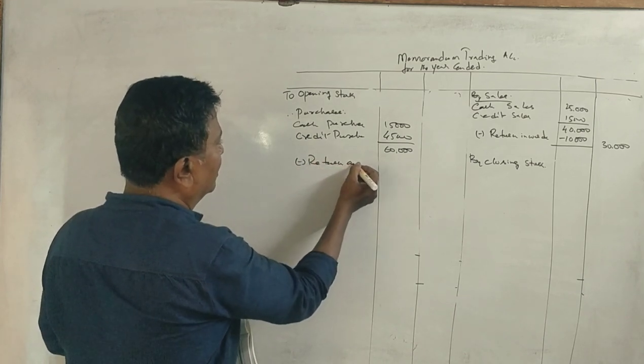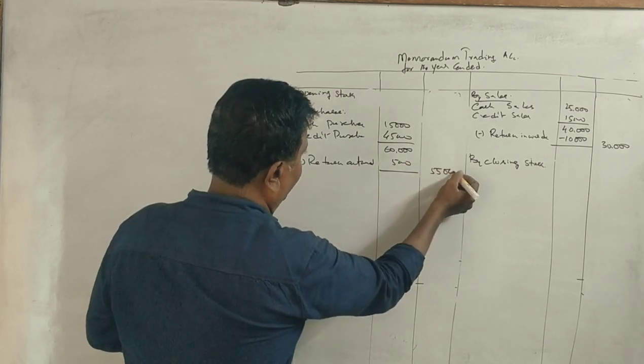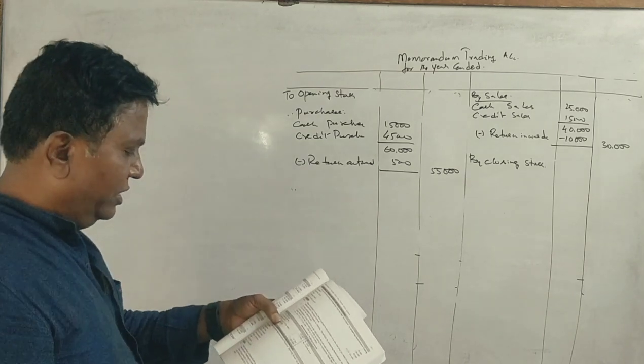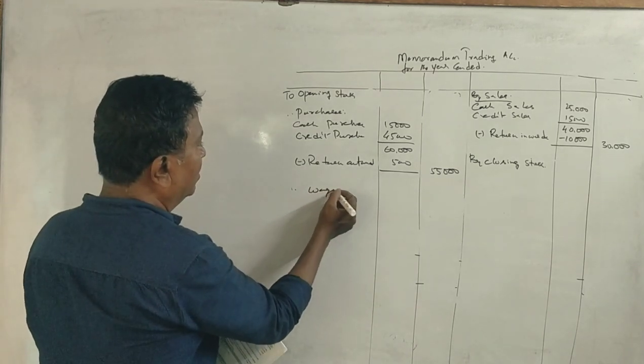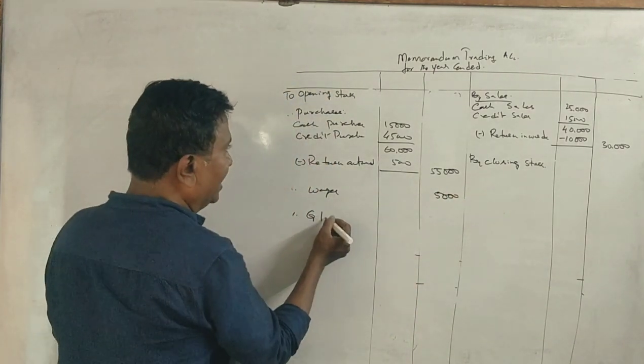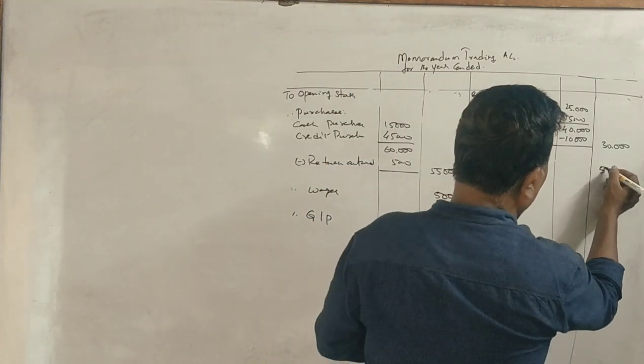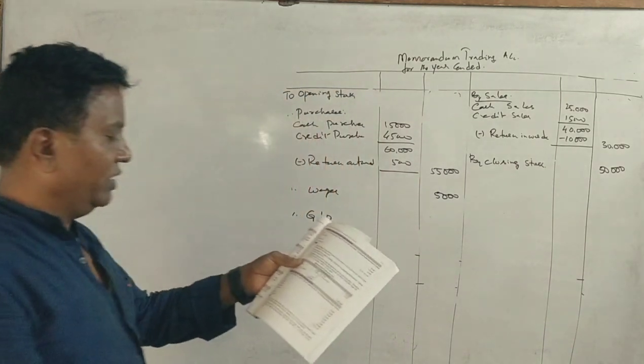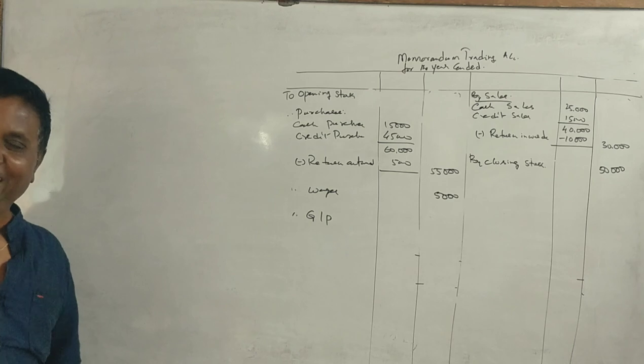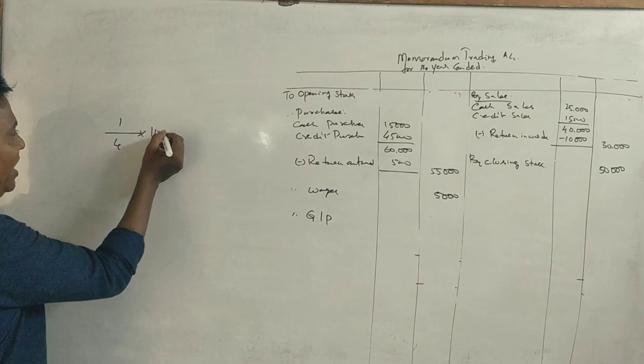Returns outwards $5,000, carriage/wages $5,000. Closing stock is $50,000. Now for gross profit calculation.